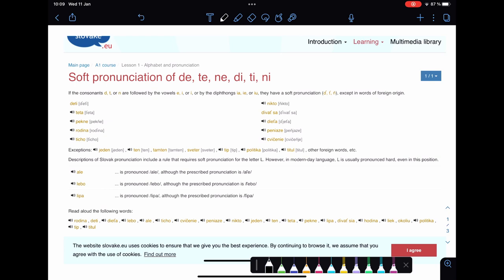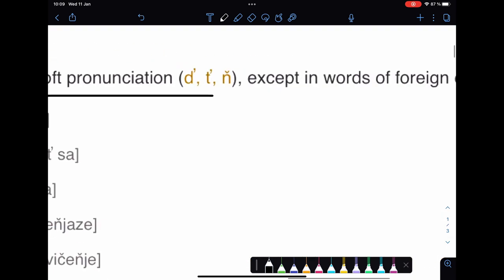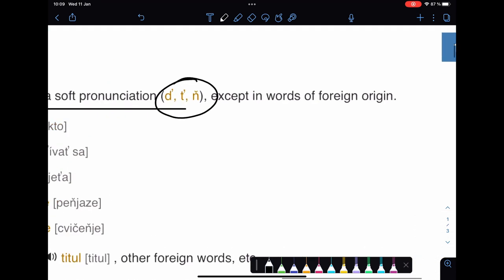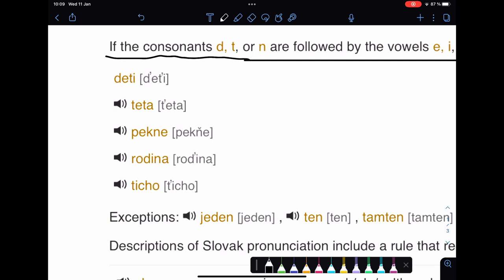Here I used a website called Slovak EU - you are going to find the link in the description. It says if the consonants d, t, n, l are followed by vowels i, e or by diphthongs ia, ie, iu, they have soft pronunciation as yet, except of the words of foreign origin.